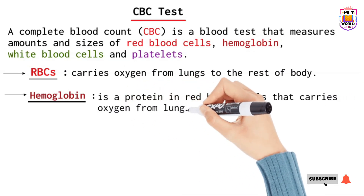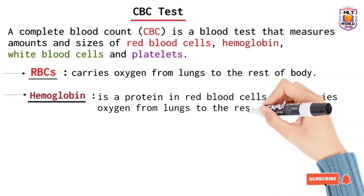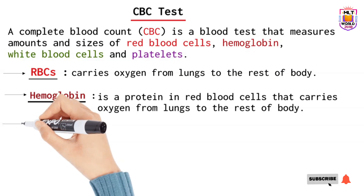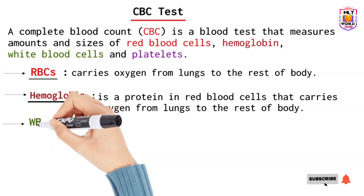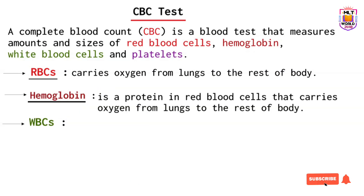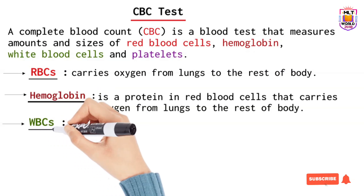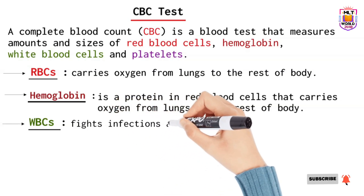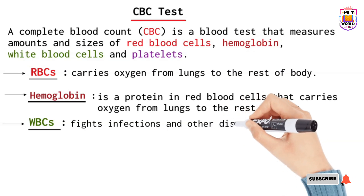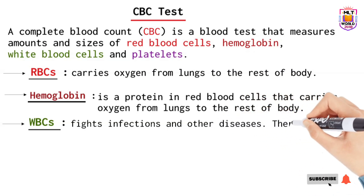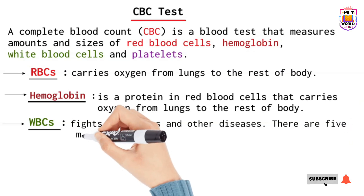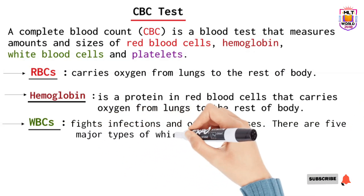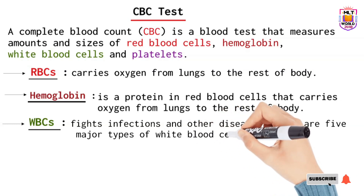Next is WBCs, that is white blood cells. The main role of white blood cells is to protect the body from organisms, antigens, or any infection such as bacterial, viral, parasitical, or fungal infections and other diseases. There are five types of white blood cells present in our body.